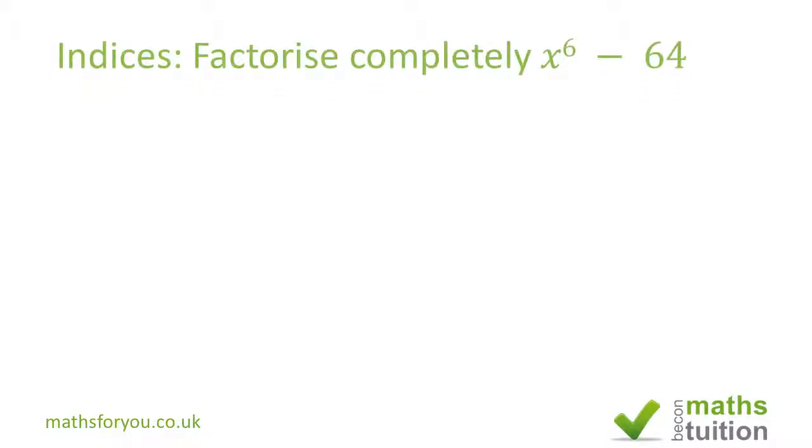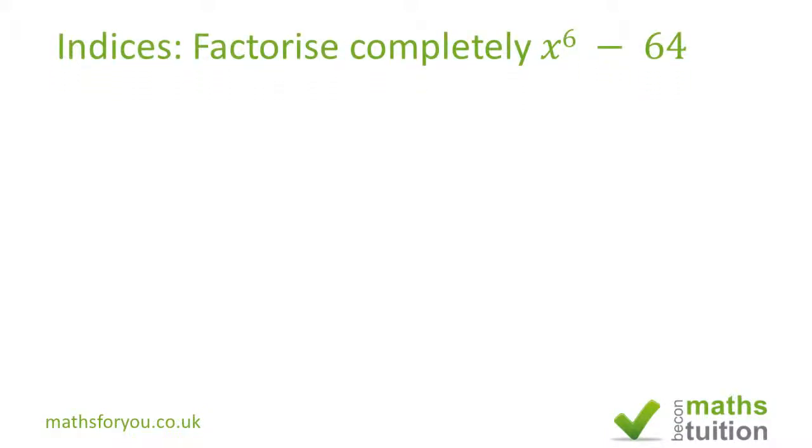Well hello and welcome to this short exercise on indices. It says factorize completely x to the power 6 minus 64. The emphasis is on the word completely. Okay, now there are two ways of doing this and I'm going to do the first method and then perhaps you can try the second method yourself. I'm going to give you a hint at the end.